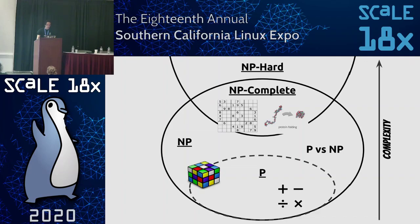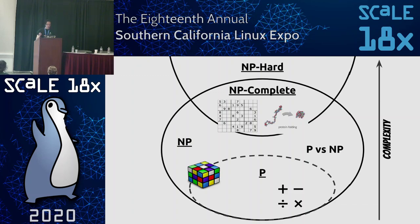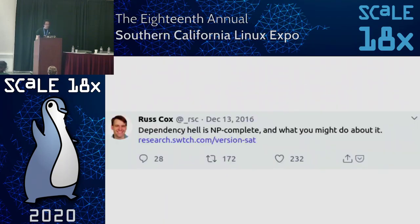NP problems include the traveling salesman problem, Sudoku puzzles, circuit design, and protein folding. If anyone can design a really good Sudoku puzzle, in theory you can help cure cancer because we could apply that to protein folding. When you reduce these problems to a decision problem in a computability context, it becomes NP-complete — meaning it's more complex, but we still have the capability to solve and verify it.